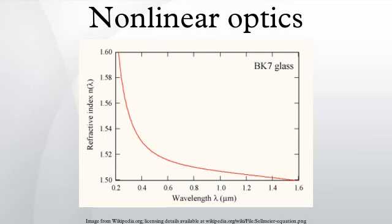Related processes: in these processes the medium has a linear response to the light, but the properties of the medium are affected by other causes. Pockels effect — the refractive index is affected by a static electric field, used in electro-optic modulators. Acousto-optics — the refractive index is affected by acoustic waves, used in acousto-optic modulators. Raman scattering — interaction of photons with optical phonons.